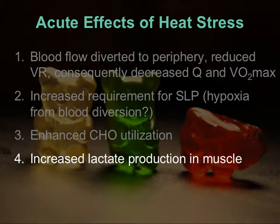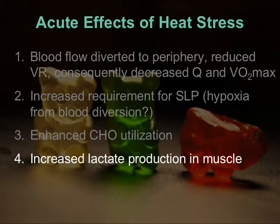These are what occur during exercise in the heat with prolonged exposure. We left off talking about how there's an increase in the lactate produced at the muscle, which might simply be due to a speeding up of metabolism. There's more of a rush of substrates through metabolic pathways, and that might result in more lactate being produced, more anaerobic glycolysis, and more ATP production from substrate-level phosphorylation.